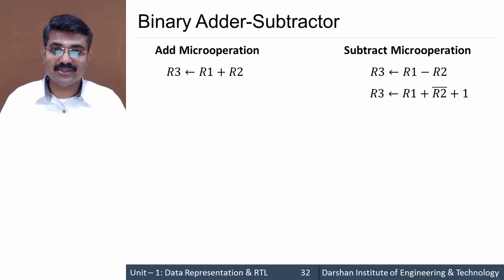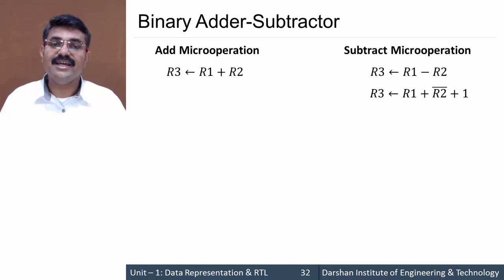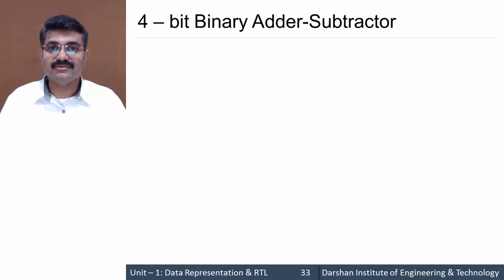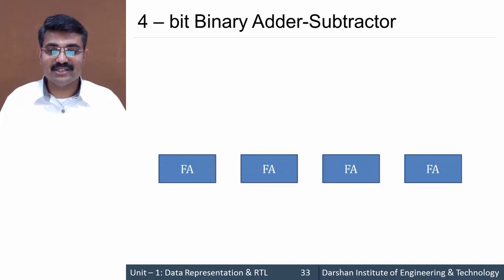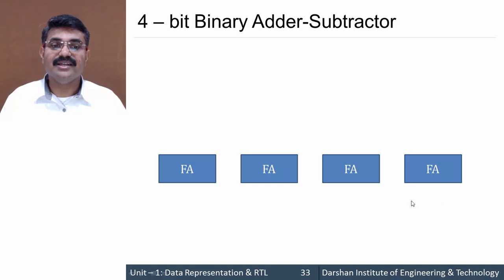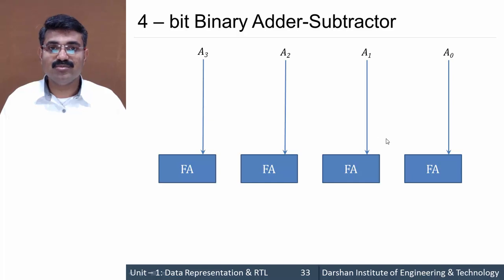This circuit is implemented using full adders and an XOR gate. We require four full adders. Since full adders require three inputs, the first input is provided as A0, A1, A2, and A3.